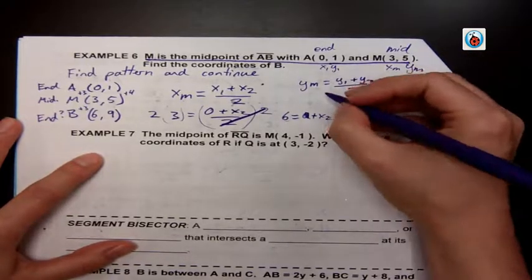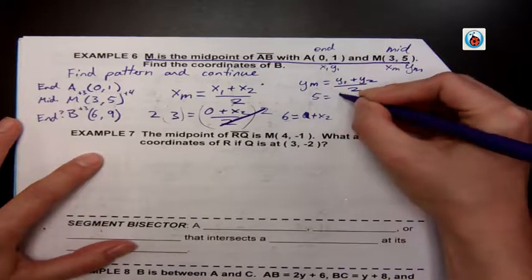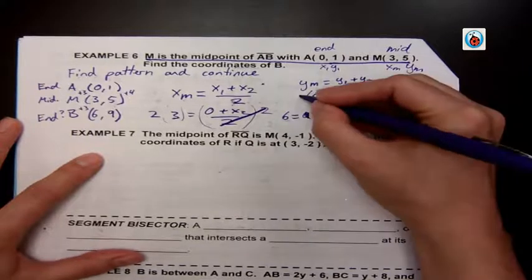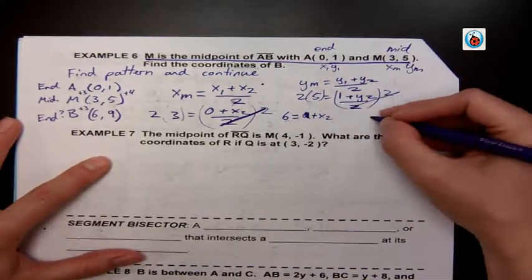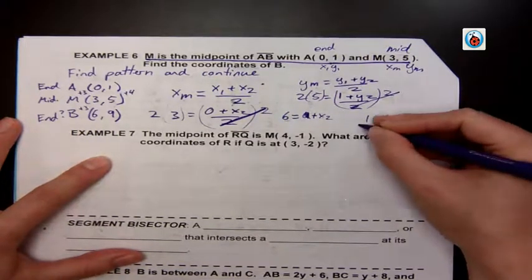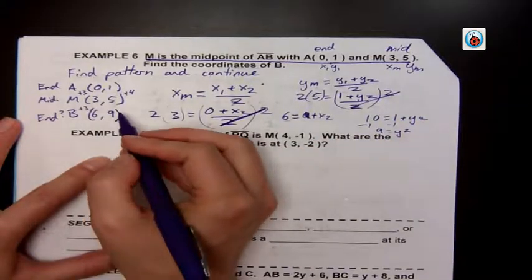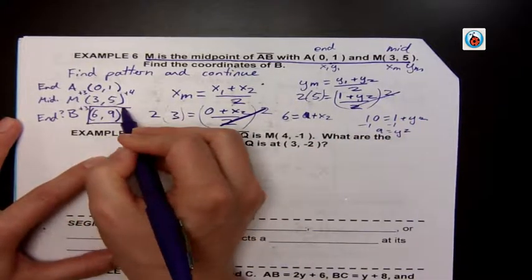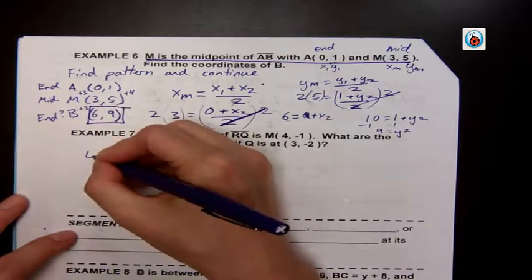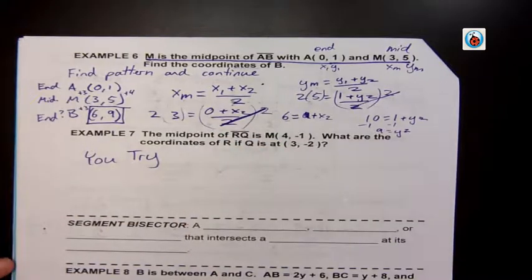Then I do the same thing for my y. So I plug in my 5, midpoint equals 1 plus y2 divided by 2. Multiply to get 10 equals 1 plus y2, and subtract 1 to get 9 equals y2, which is the same as my answer there. So you choose which is easier for you: do you like the algebra part, or do you like to find the pattern and continue? So this is another one for you to try—check your answer with your teacher.